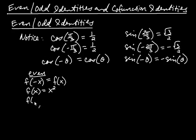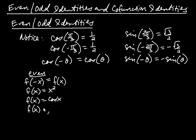Cosine is an even function, and likewise secant is even. That's not surprising because secant is the reciprocal of cosine.